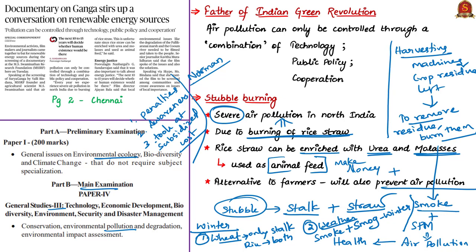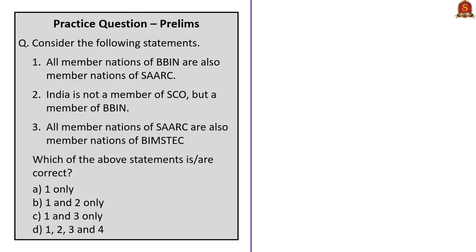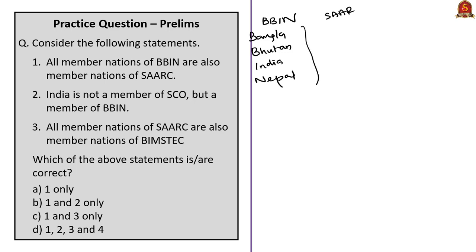Now we will see a few practice questions. The first question has three statements asking which are correct. The first statement is that all member nations of BBIN are also member nations of SAARC. BBIN stands for Bangladesh, Bhutan, India and Nepal. We know these four countries are also member nations of SAARC — South Asian Association for Regional Cooperation. So the first statement is correct.